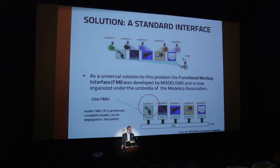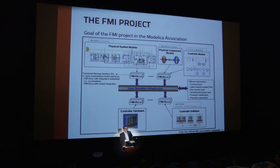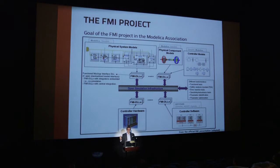So with this standard interface, the idea is that we have different units that comply to the standard. They are called FMUs — a functional mock-up unit. Inside the FMU, IP is protected. It's a compiled model and it can be deployed to third parties or inside the company. The goal of the FMI project and the Modelica Association is to bring together in an open simulation infrastructure: physical system models, whole systems, component models of physical systems, controller models, controller hardware and controller software. All of these models or the real software are encapsulated in a DLL within the complete FMI interface.